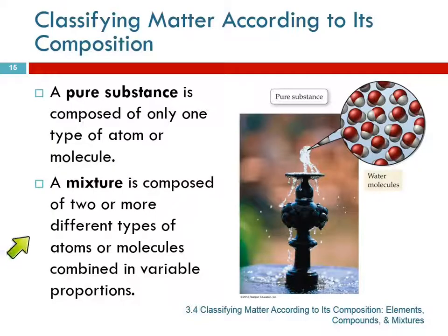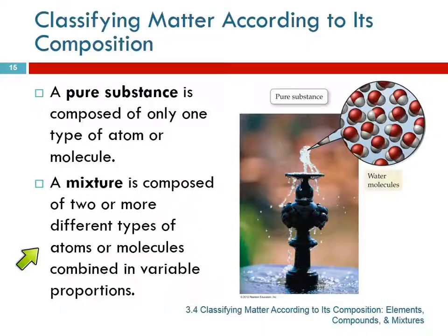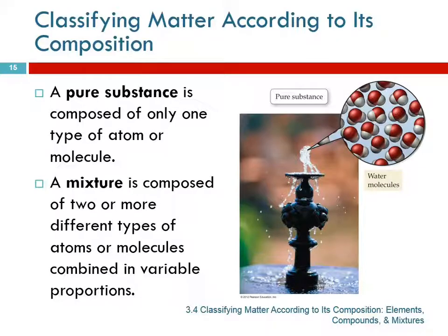In a mixture, you have two or more different types of particles, and they're just kind of randomly mixed together. An example of a mixture would be something like salt and sand. You can mix it up, but there are sand particles and salt particles.